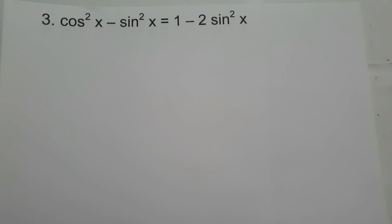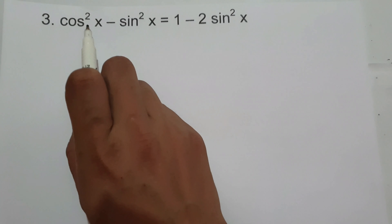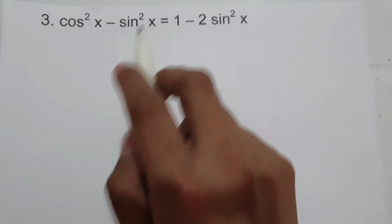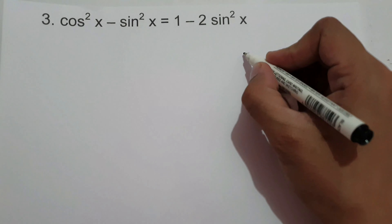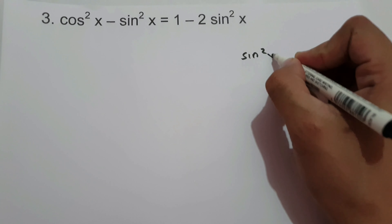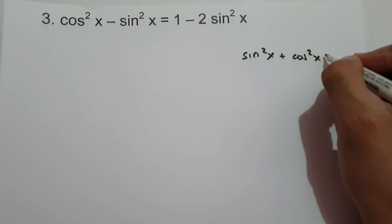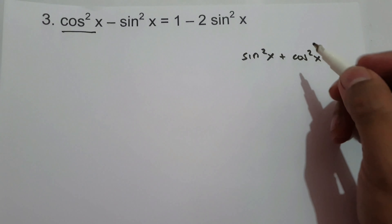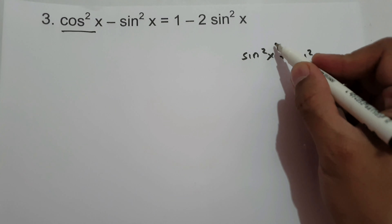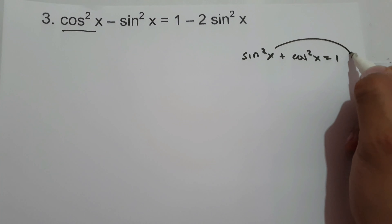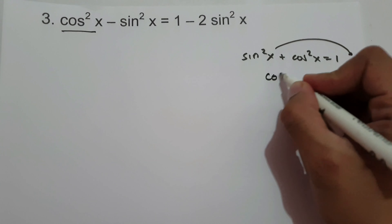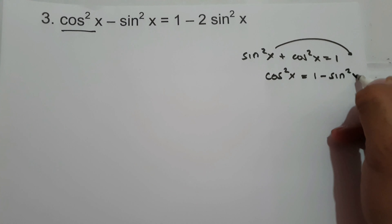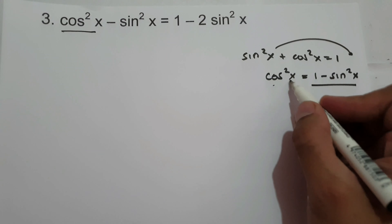On example number 3, we are going to prove cosine squared x minus sin squared x equals 1 minus 2 sin squared x. To prove the given identity, let us use sin squared x plus cosine squared x equals 1, and we want to find the value of cosine squared x. So let us move sin squared x to the other side, so we have cosine squared x equals 1 minus sin squared x.